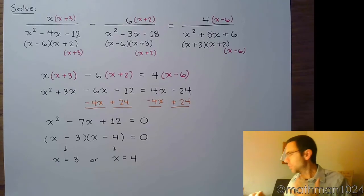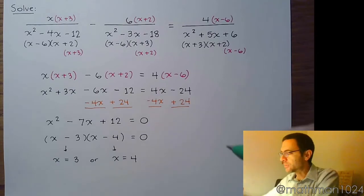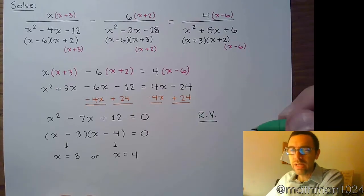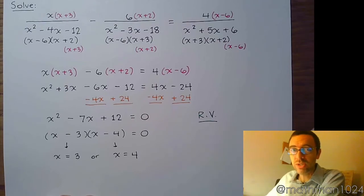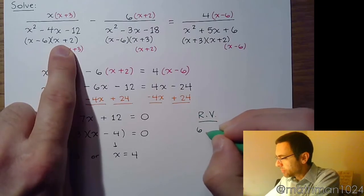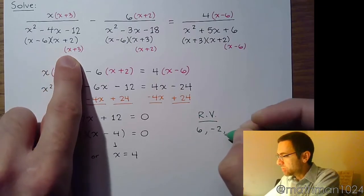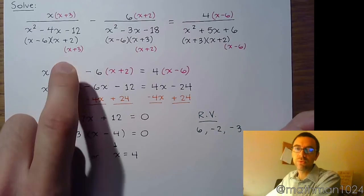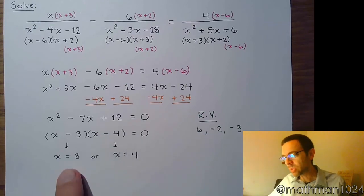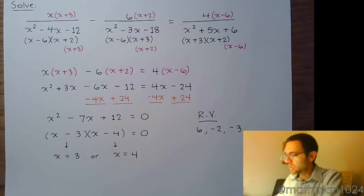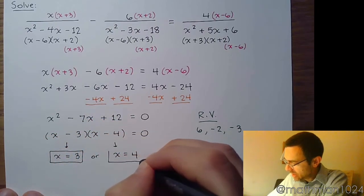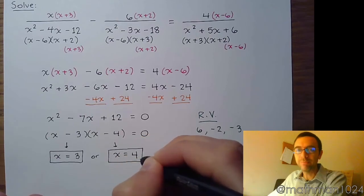I would just go ahead and box these answers, but we have to be careful because we're dealing with a fraction. We must always be mindful of our restricted values. That would mean any value of x that would cause the denominator to become 0, which means you cannot have positive 6, you can't have negative 2, and you can't have negative 3. As long as we don't have any of those as our potential solutions, we're going to be okay. So these are the two answers and everybody can be happy.